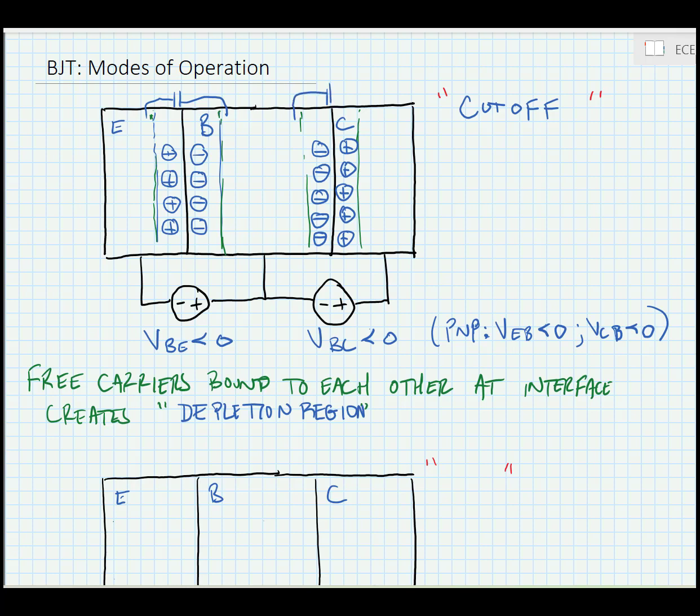We can do this parallel plate capacitor at the emitter base junction and the collector base junction. The capacitor at the emitter to base junction has a name in the small signal model, we call this C pi. And the collector base junction we call C mu.